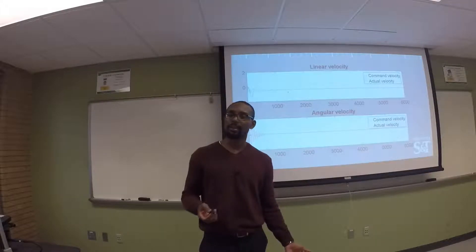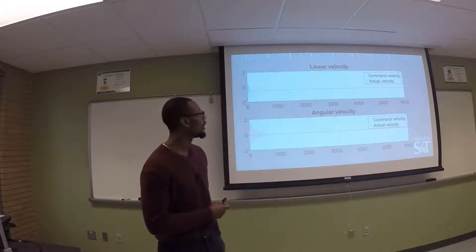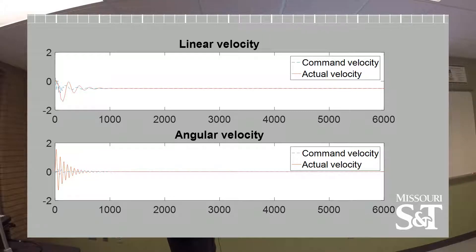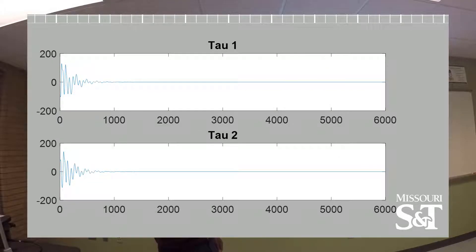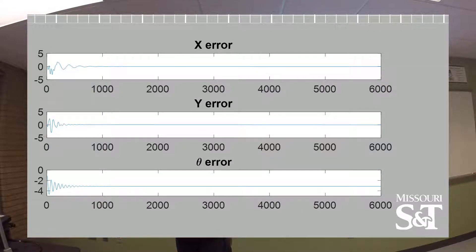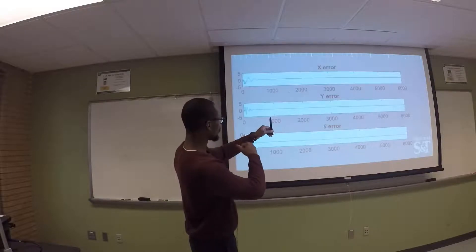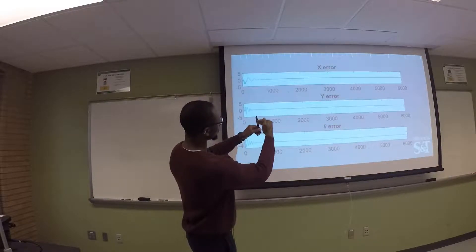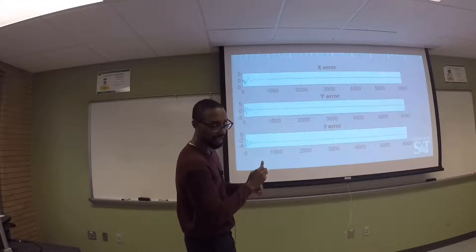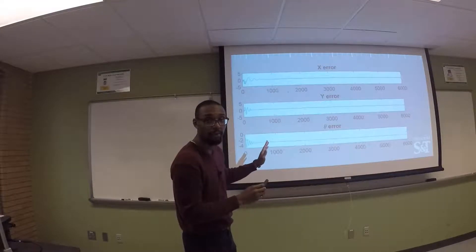This is not really terribly important, but I'll just mention that we have good plots — the command velocity and the actual velocity are converging to the same value with the linear and angular velocities. Control torques are all bounded in very small values, the errors all go to zero. The theta error actually is not zero in this case — it's pi over two, that's 90 degrees, because we set the reference robot to be at 90 degrees. Our actual robot was at about 180 degrees, and it kind of oscillated, as we'll see in the next slide, as it attempts to follow the reference robot's path.